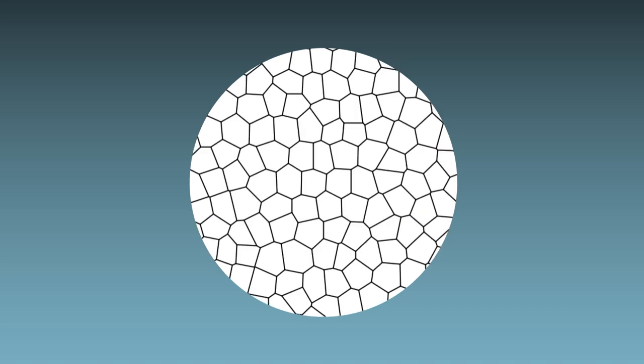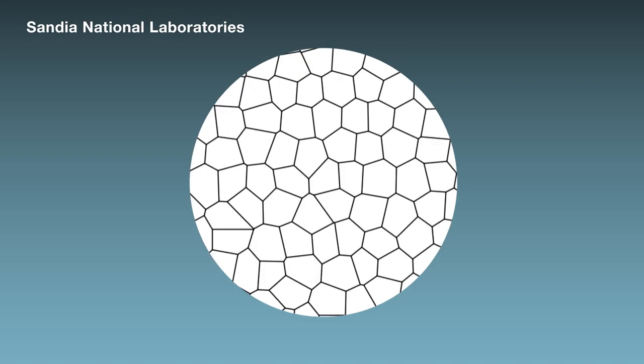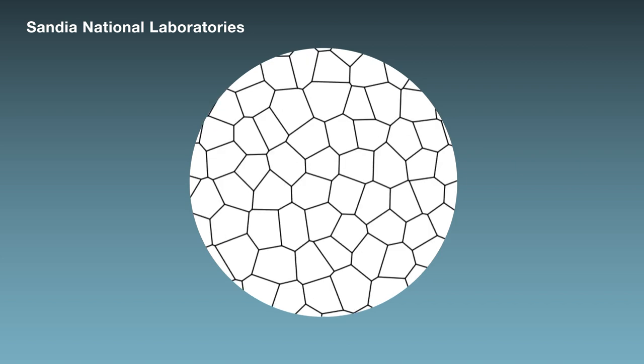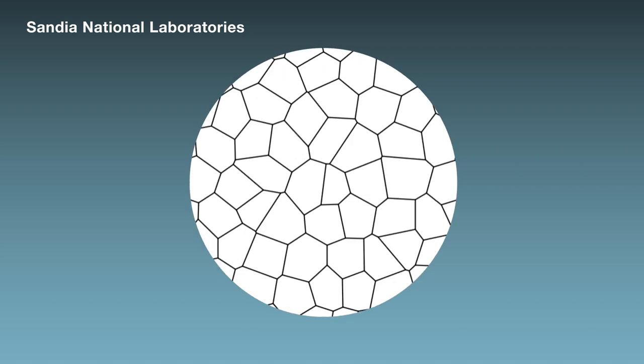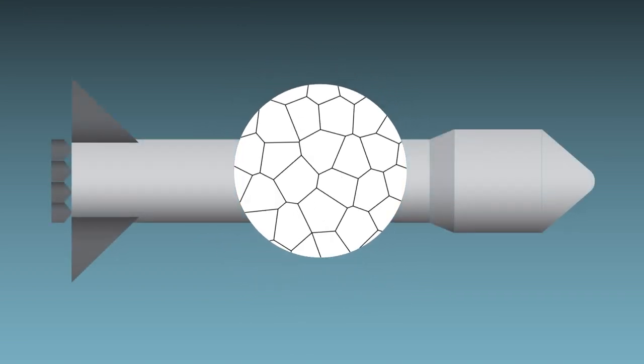While researchers have generally attributed rapid grain growth to a single common mechanism, a team from Sandia National Laboratories suggests that not all fast-moving grains are created equally. That insight might force scientists and engineers to rethink how to make metals stronger and safer.